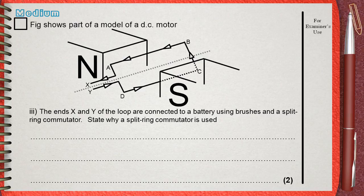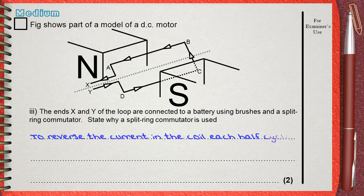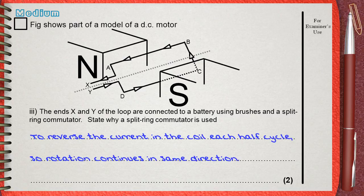What causes the reversing of the current each half cycle in the coil is the commutator, so the answer will be to reverse the current in the coil each half cycle, so rotation continues in the same direction.